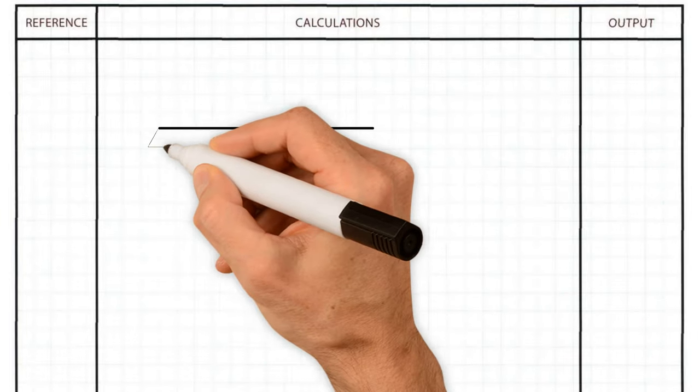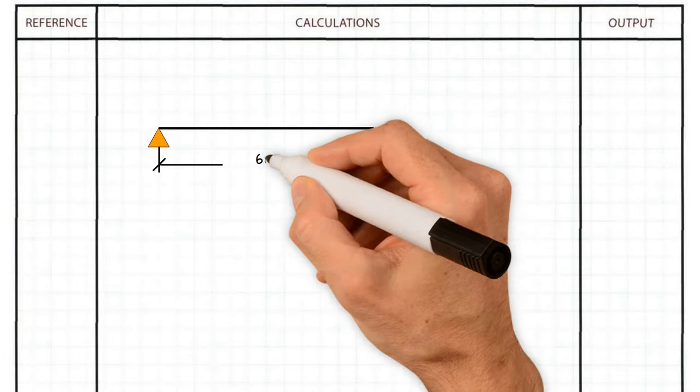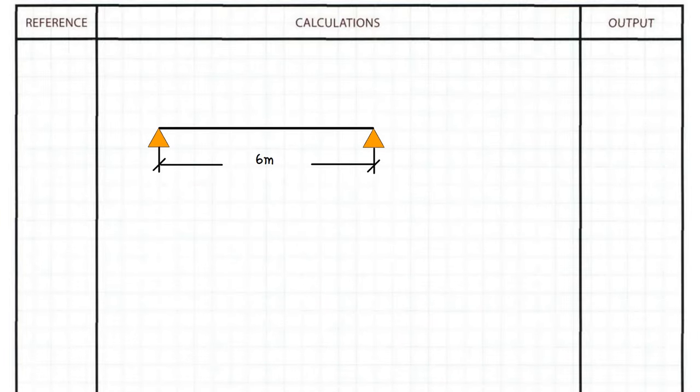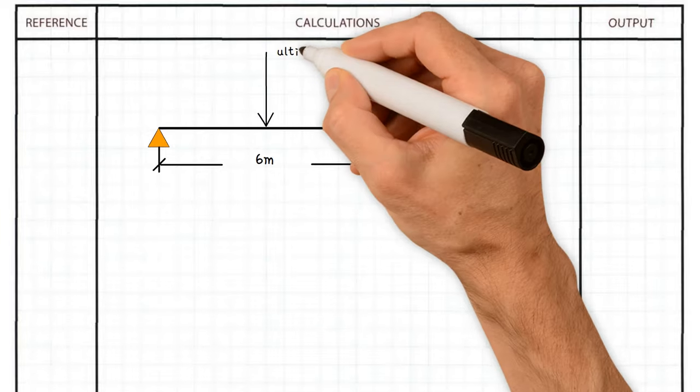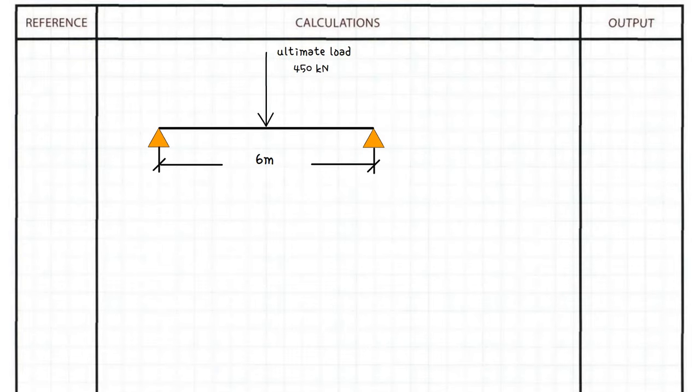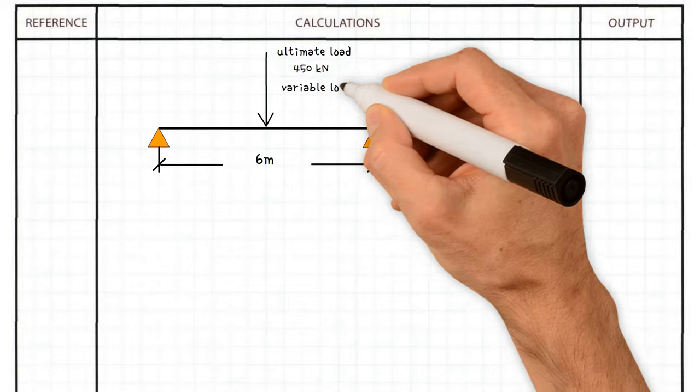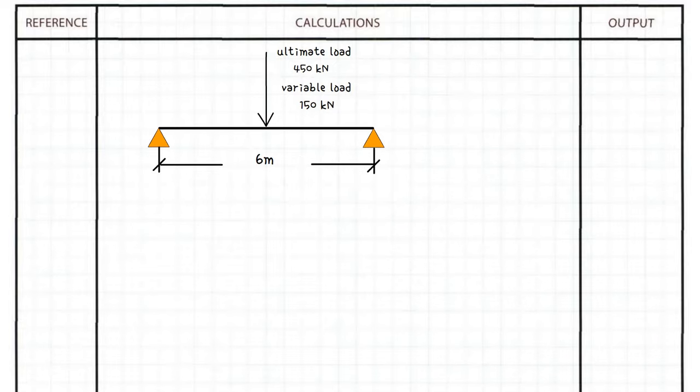A simply supported, unrestrained steel beam spanning 6 meters is supporting another steel beam in the middle of its span. The ultimate load from this beam is 450 kilonewtons, while the serviceability load due to variable actions is 150 kilonewtons.